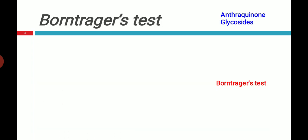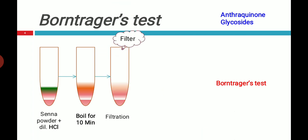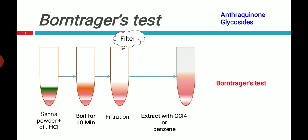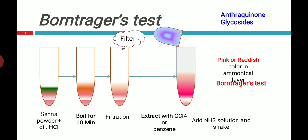We will see that with the animation. First, take Senna powder and dilute HCl, then boil it for 10 minutes. After boiling, filter it out. Take the filtrate and add an organic solvent like CCl₄ or benzene. Then add ammonia solution. After addition of ammonia, the ammonical aqueous layer will form a pink or reddish color. That is the Borntrager test.